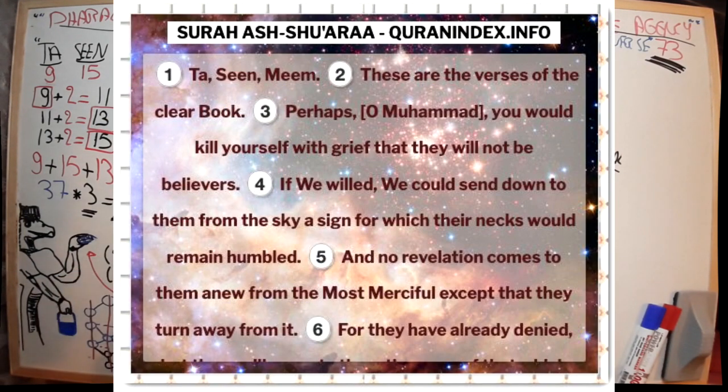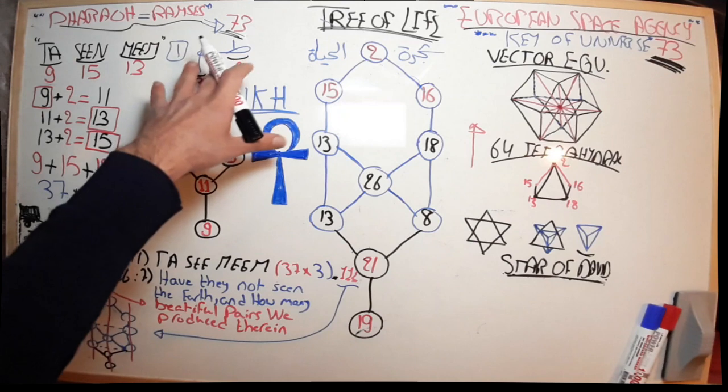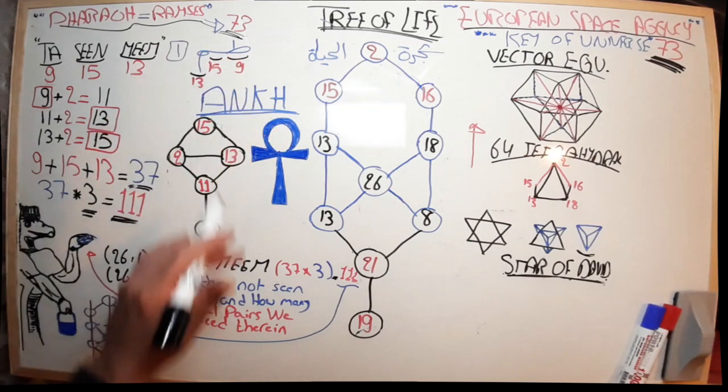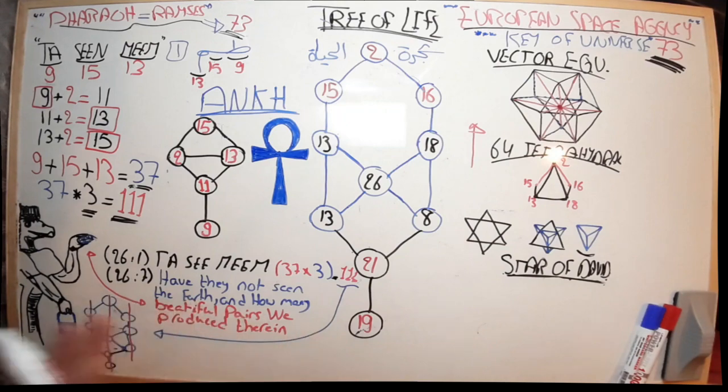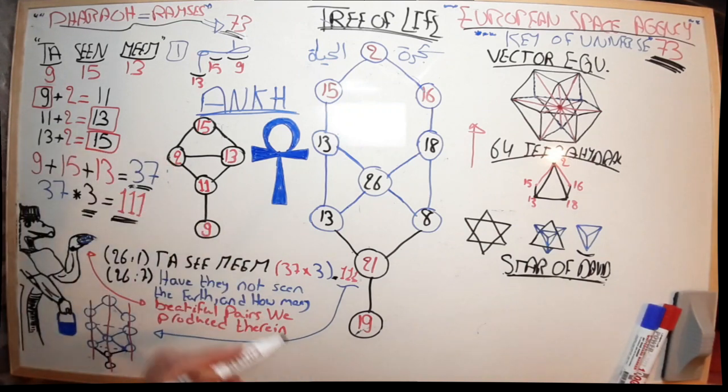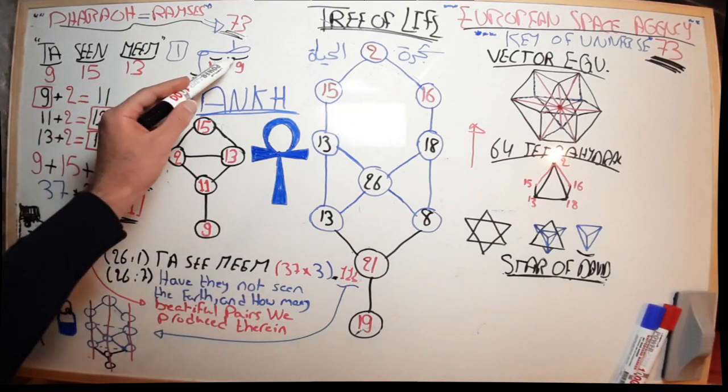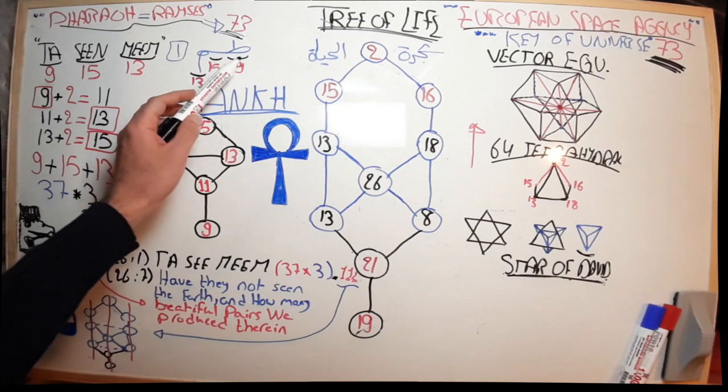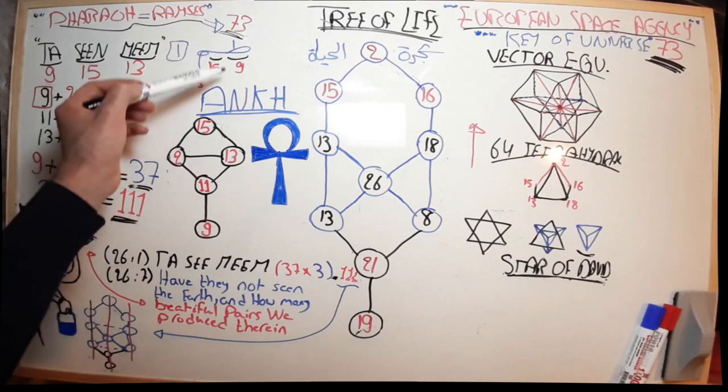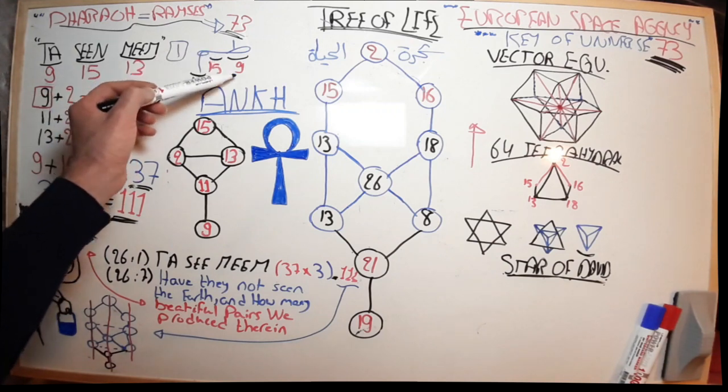Today we're going to try to decode the Ankh from Ta-Sin-Meem. I need to remind you that while I was trying to decode those broken letters, what we call al-muqatta'at in Arabic, I was never intentionally trying to decode the Tree of Life or the Ankh or the pyramid—it just was there. So one of these verses starts with Ta-Sin-Meem.